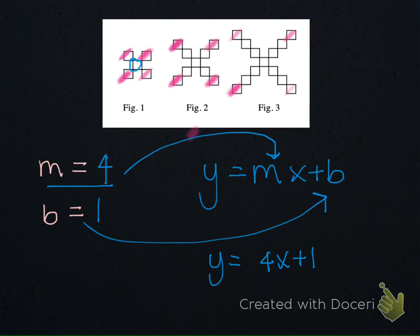We can pick any one we want. We'll go ahead and take figure 2. Figure 2 has 9 tiles in it, so when I go ahead and put in a 2, I should get out a 9. 4 times 2 is 8 plus 1 is 9. Therefore, this rule checks out.